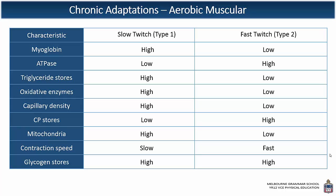Here are the characteristics. ATPase — the enzyme responsible for fast breakdown — you're going to have a higher level in fast twitch fibres. Triglyceride stores are the fuel used by the aerobic system, so you'll have high in slow twitch and low in fast twitch. Oxidative enzymes — again, high in slow twitch and low in fast twitch — as well as capillary density: fast twitch fibres are going to have low capillary density as the capillaries are bringing oxygen to the muscle. In terms of CP stores, the ATP-CP system is responsible for maximal explosive exercise, so fast twitch will be much higher. Mitochondria are higher in slow twitch — that's the aerobic ATP production factory — which increases as a result of training and aids efficiency and economy.